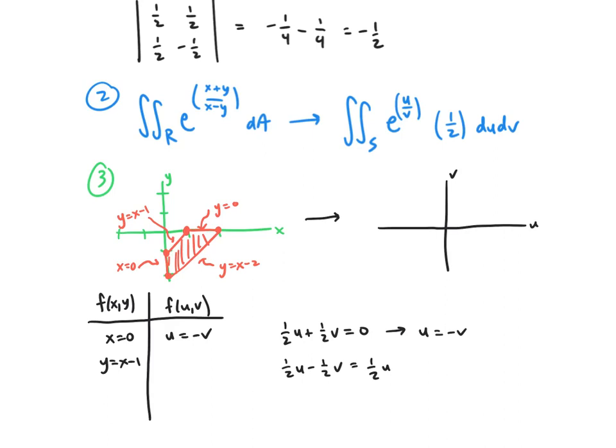We have y = x - 1. So that gives us 1/2 u - 1/2 v = 1/2 u + 1/2 v - 1. And if we solve that, we get v = 1.